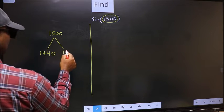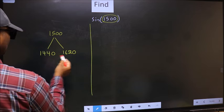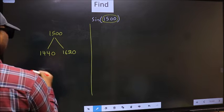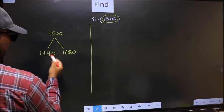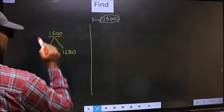1440 and 1620. This is 180×8 and this is 180×9. Between these two numbers, 1500 lies.